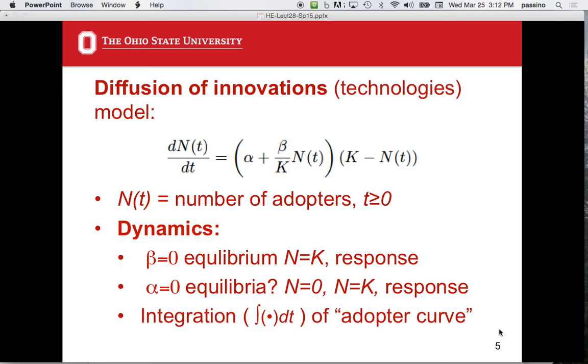If you start with the number of adopters at zero, it'll be stuck at zero. If you bump it off at zero, it'll go to K. Just like the other case, actually. It's interesting. The way the algebra is set up here, it'll go in that case.